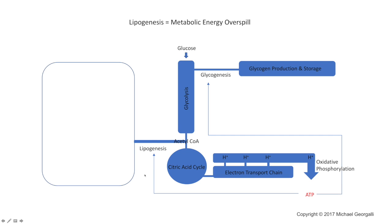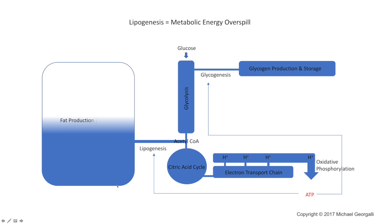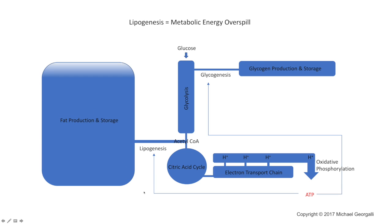That excess acetyl-CoA is used to create fat — for example, triglycerides. In short, lipogenesis acts as an overspill mechanism that takes away some of the burden from the citric acid cycle in terms of the acetyl-CoAs that are backing up within the metabolism.